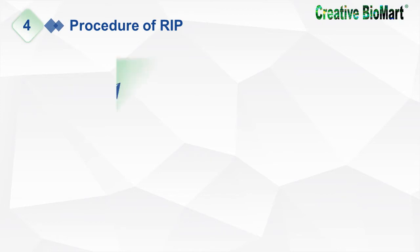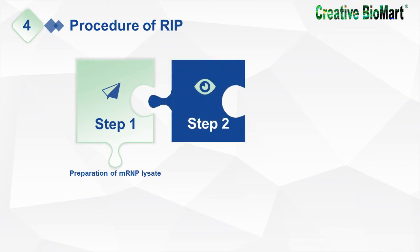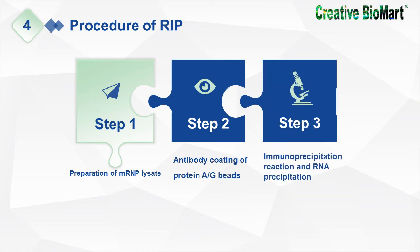Part 4: Procedure of RIP. Step 1: Preparation of mRNP lysate. Step 2: Antibody coating of protein A/G beads. Step 3: Immunoprecipitation reaction and RNA precipitation.